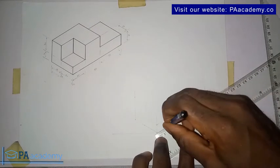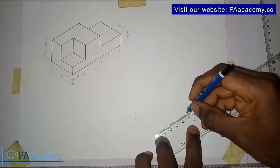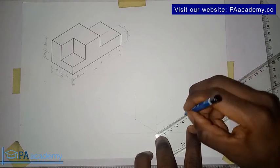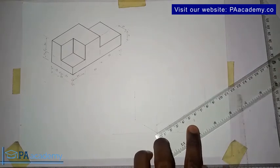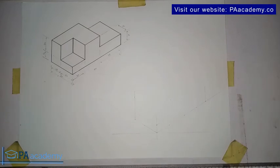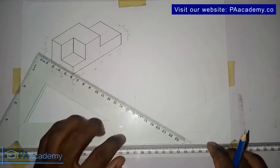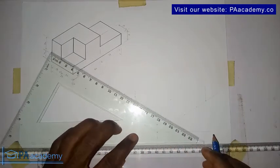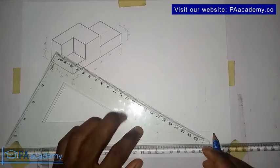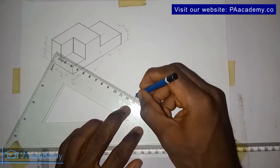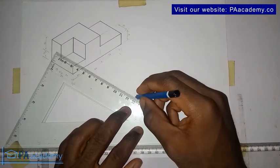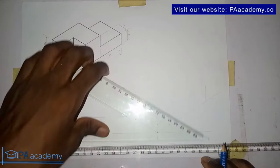So 20 plus 25, that will give us 45. So I bring in my T-square. So from this point now, draw this line inward. I'm still working with faint lines.